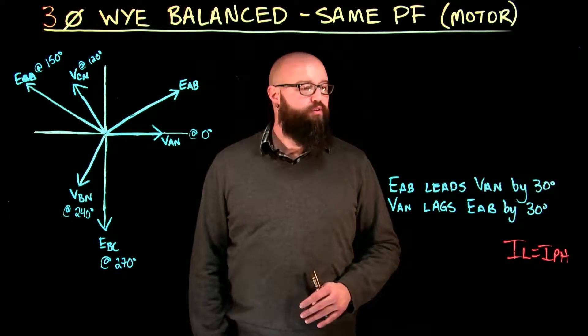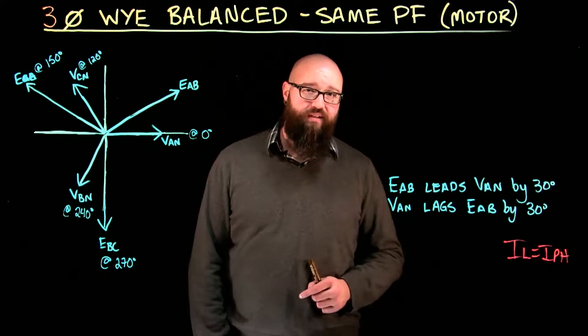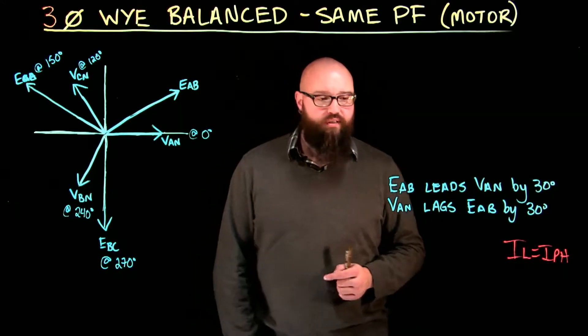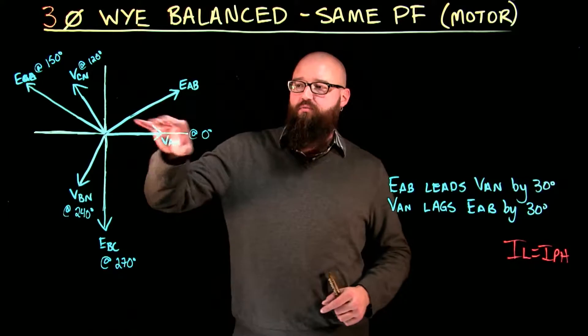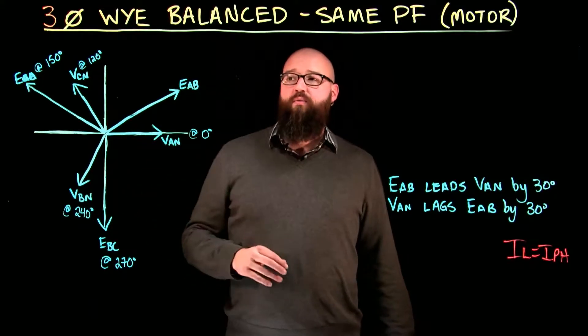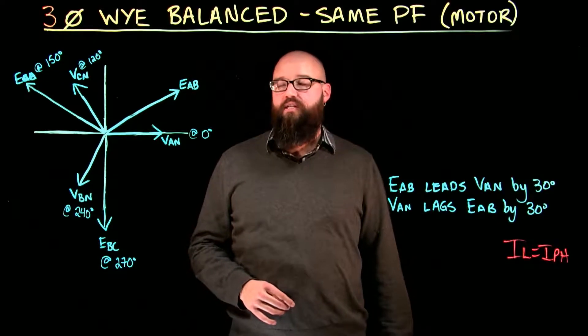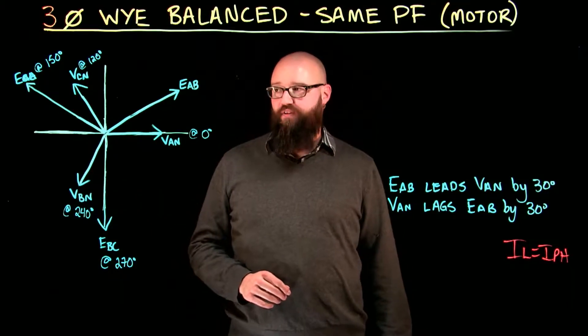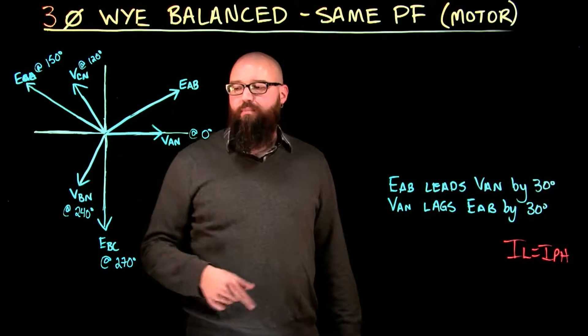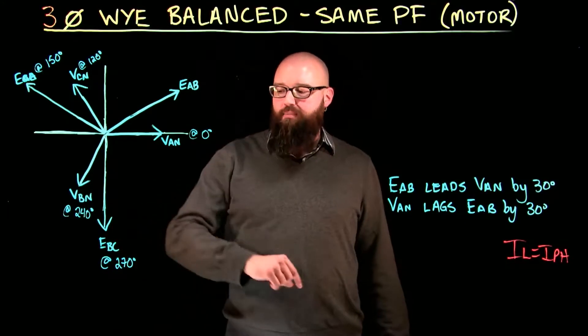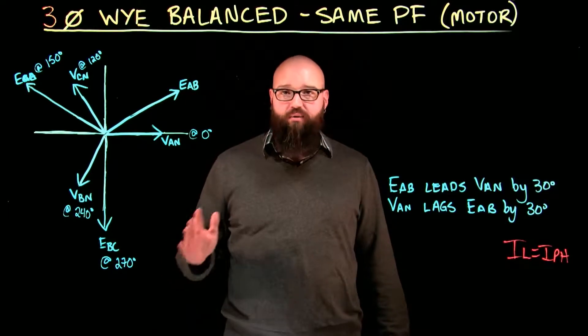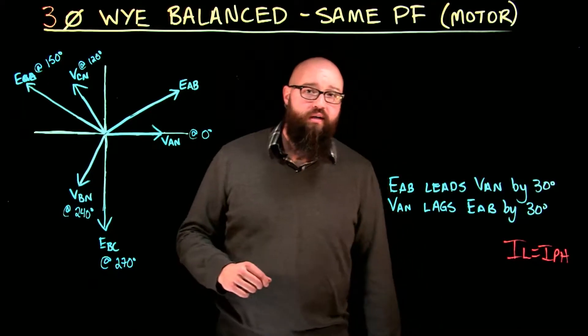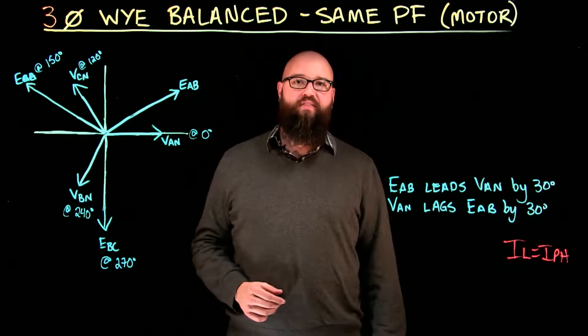If you joined me in previous videos, you'll notice that I have left some of the information up here that is still relevant to this load because it is still a three phase Y balanced load. For example, I've left all of the voltage phasers. We still have our V A to N as our reference at zero, which means our E A to B is going to lead that reference by 30 degrees. I still have my C to N at 120 degrees, which means my E C to A is at 150 degrees, leading by 30 again. And I have my V B to N at 240 degrees, which means my E B to C is at 270 degrees. That relationship will not change as long as we have a Y connected circuit with an intact neutral. It will always remain with these voltages at their respective angles.